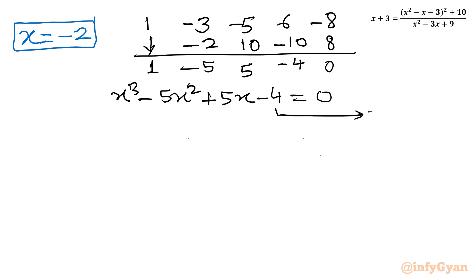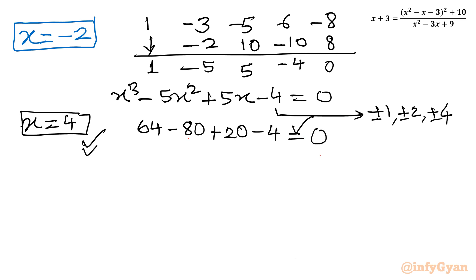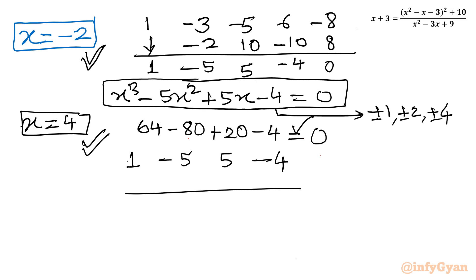Applying the rational root theorem again: eligible factors are ±1, ±2, ±4. Testing x = 4: 4³ - 5(4²) + 5(4) - 4 = 64 - 80 + 20 - 4 = 84 - 84 = 0. So x = 4 is also a root. Performing synthetic division with base 4 and coefficients 1, -5, 5, -4: bringing down 1; 4×1=4, giving -1; 4×(-1)=-4, giving 1; 4×1=4, remainder 0. The resulting quadratic is x² - x + 1 = 0.